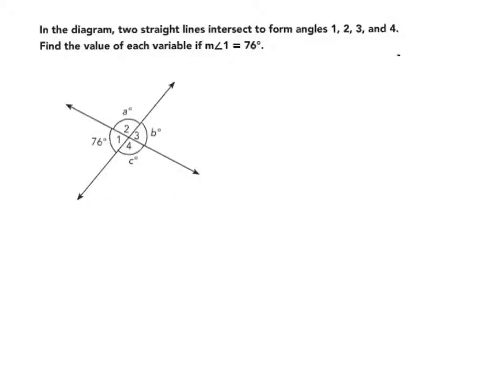In the diagram, two straight lines intersect to form angles 1, 2, 3, and 4. Find the value of each variable if the measure of angle 1 equals 76 degrees.